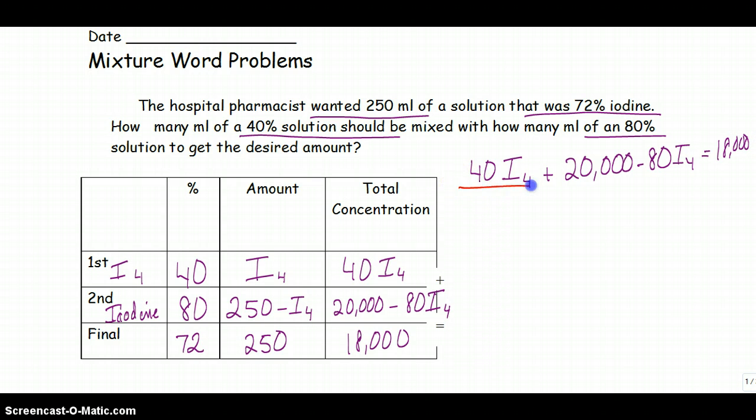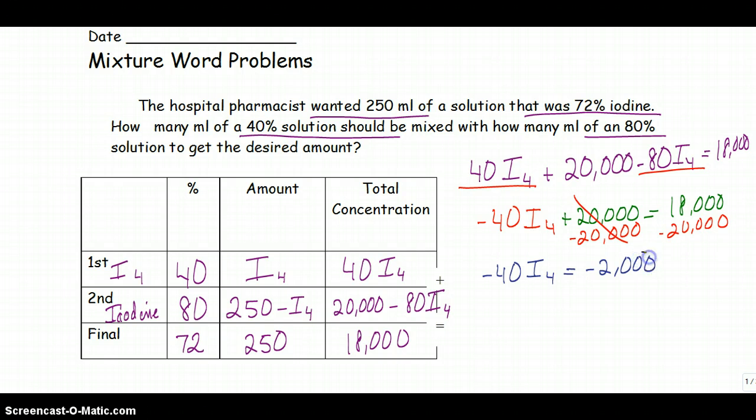Now I'm going to go through and combine my like terms. 40I sub 4 minus 80I sub 4 is going to give me negative 40I sub 4 plus 20,000 is equal to 18,000. I'm going to subtract 20,000 from both sides using my inverse operations. So now I have negative 40I sub 4 is equal to negative 2,000.